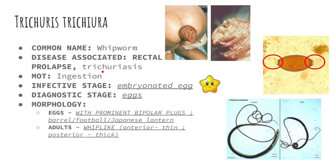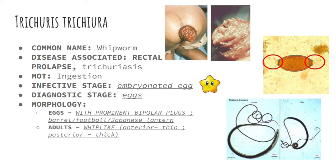Rectal prolapse is when the rectum protrudes out through the anus, and this can happen due to Trichuris trichura infection or trichuriasis. The mode of transmission is through ingestion of the embryonated egg — that is the infective stage. The diagnostic stage of Trichuris trichura is the presence of eggs in the stool, which can be either embryonated or unembryonated.